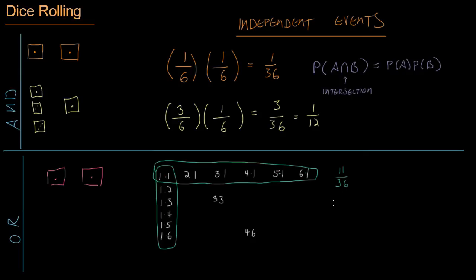So, but what did we just do? We counted up these six outcomes right here, and then we added these six outcomes on the left column. But this guy right here, the event that we have two ones, he is double counted. He is in both the first row and in the left column.